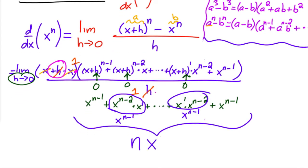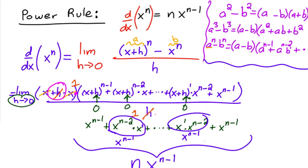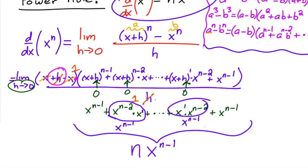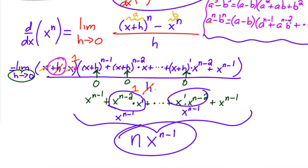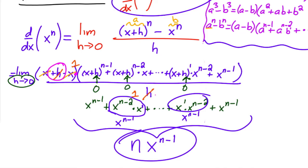Well, how many of these do you have? You have n x to the n minus ones. And that's it, you've proved it. Now this is just for integers, and you can prove it for any real number but you need a little bit more information, a little bit more tools. But for now that's good enough.